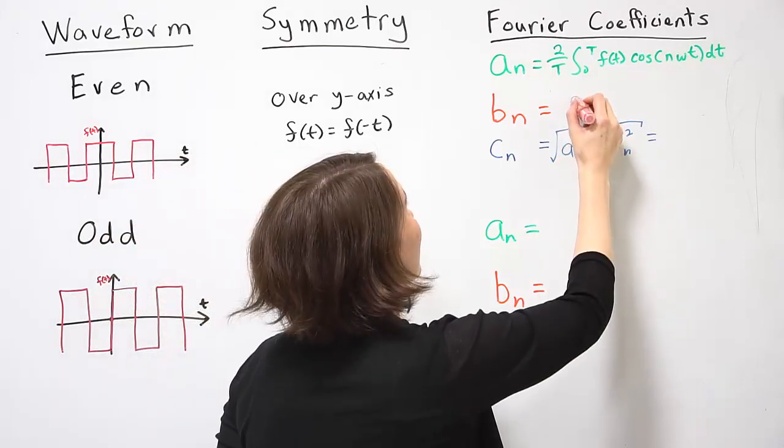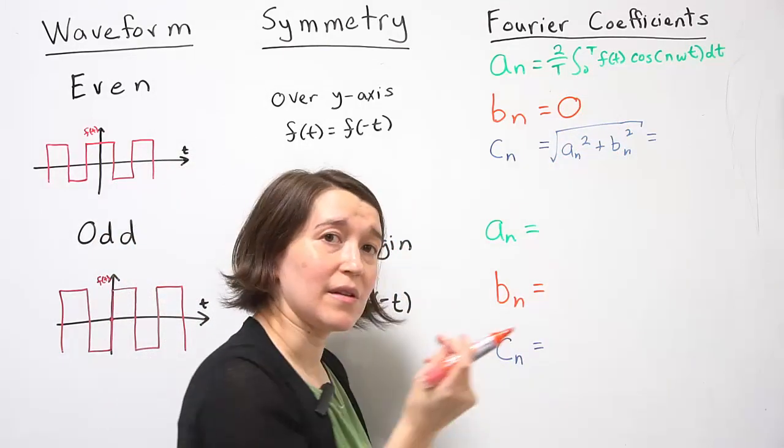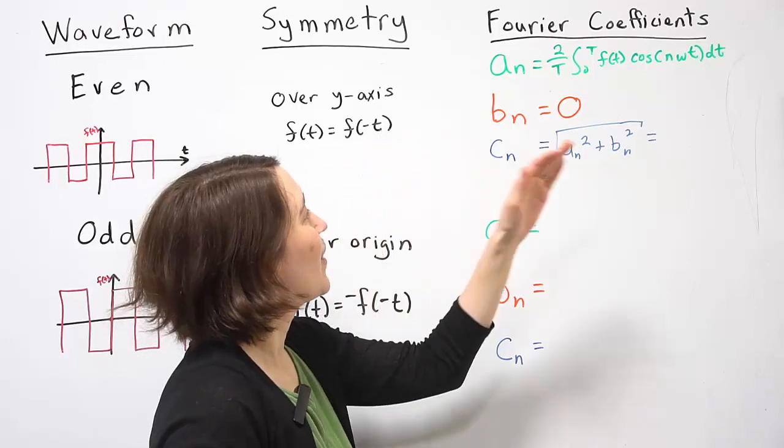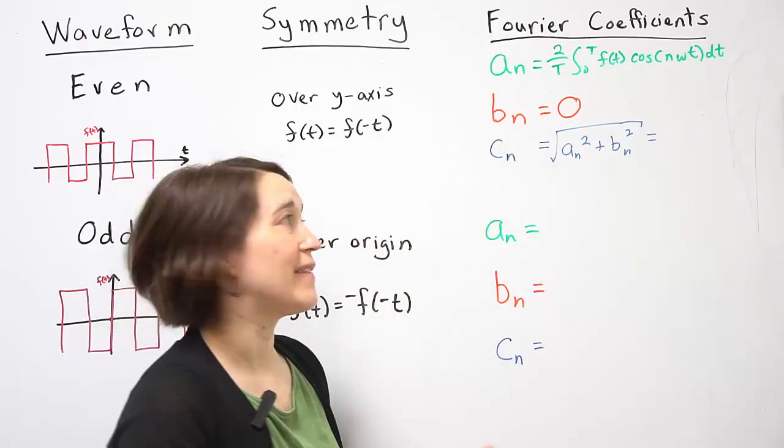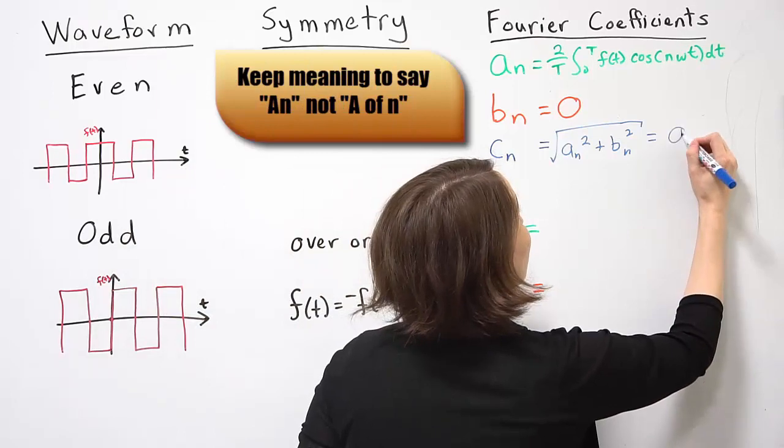This means that Bn will actually be 0. Since Bn is 0, Cn will just be exactly identical to An.